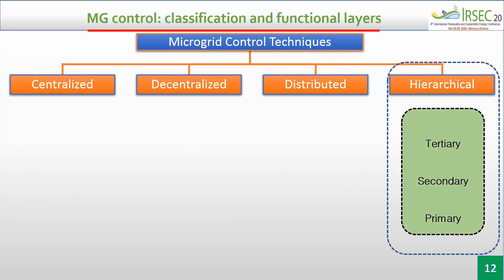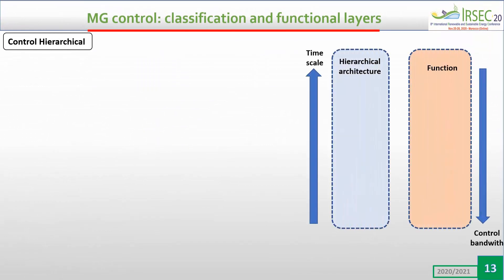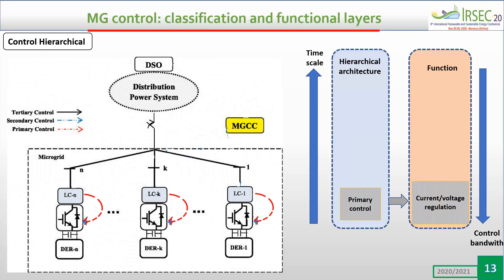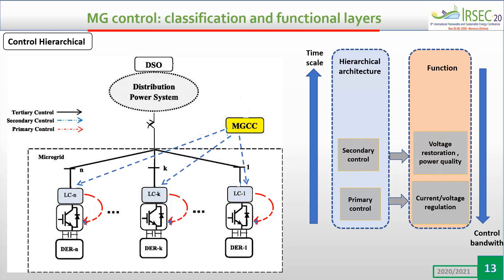The hierarchical control architecture is also divided into three-layer structures: primary, secondary, and tertiary. This structure is based on the difference in time scale of various control requirements. The primary layer is meant for instantaneous control of microgrid devices, operating in milliseconds to seconds. The secondary control layer is slower, operating in minutes, for eliminating steady-state deviations from the primary layer. The tertiary layer is the slowest, operating over several minutes to an hour, and it implements economic dispatch and optimization.